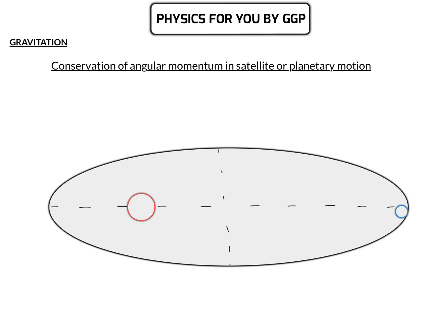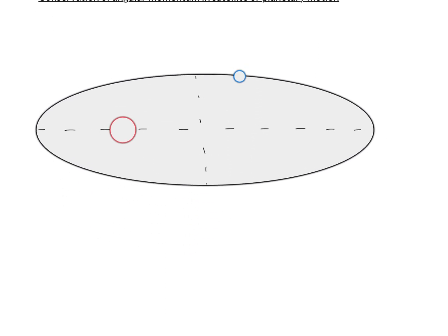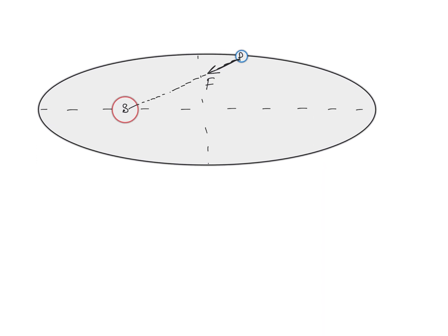Consider a planet revolving around the sun in an elliptical orbit. At any instant, if we observe the forces acting on this planet, the sun exerts a gravitational force on it. Other than gravity, there are no other forces acting on the planet. So the force acting on the planet is nothing but the gravitational force of attraction by the sun.